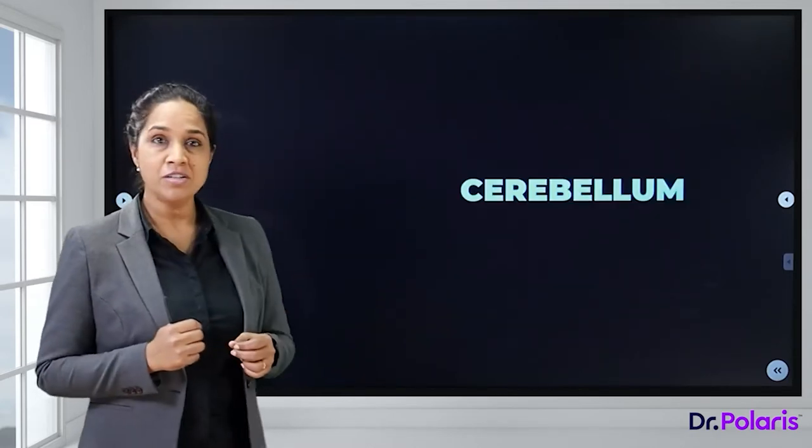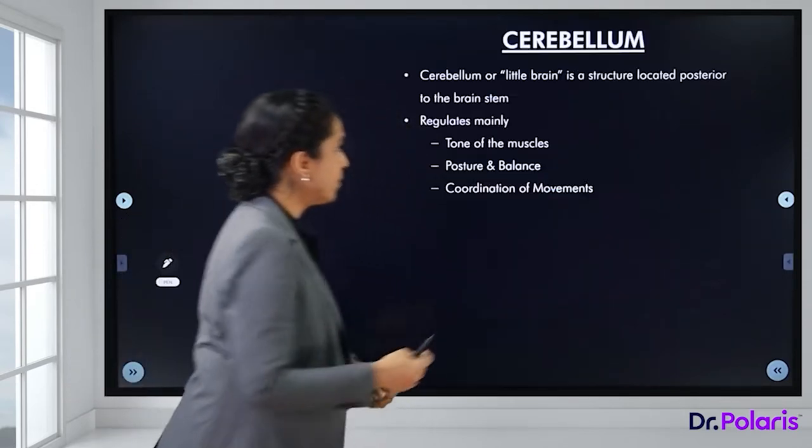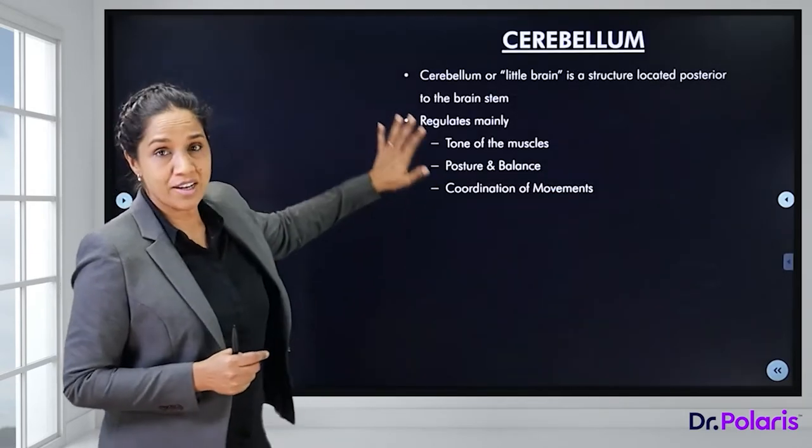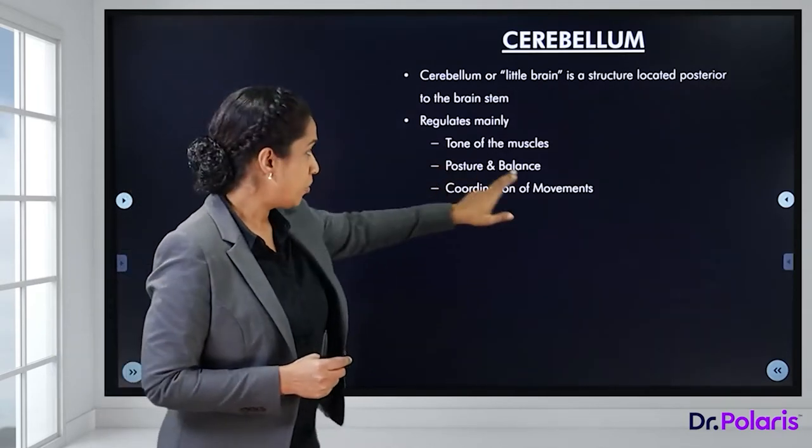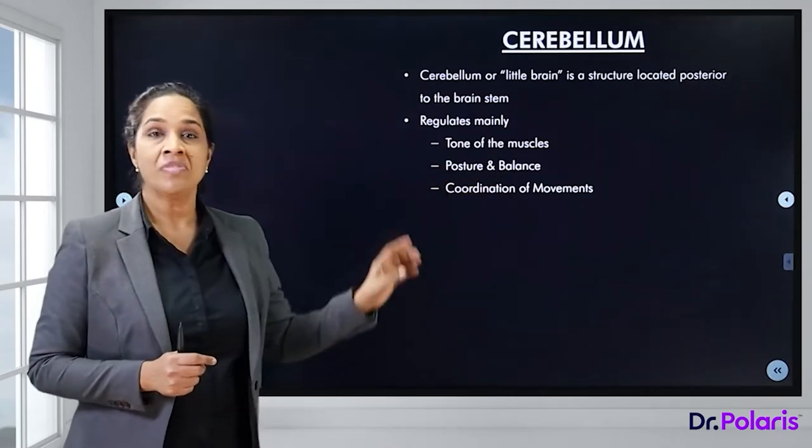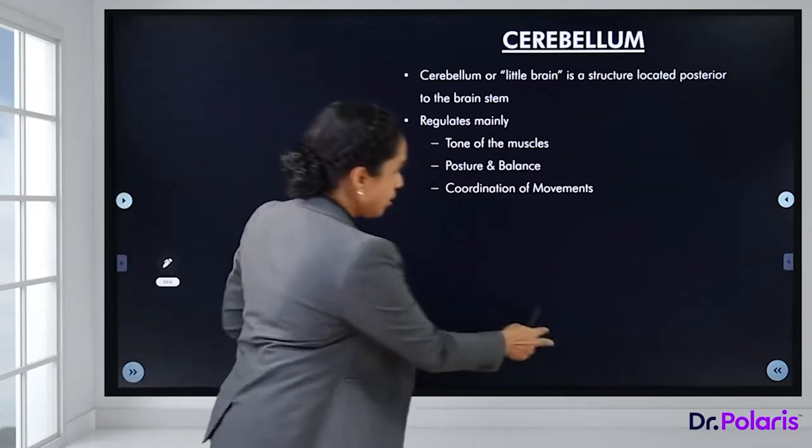Cerebellum is called the little brain because it shares so many similarities with the cerebrum. It is a very important structure for the maintenance of posture and equilibrium, and the number of nerve cells present in the cerebellum is much more than in the cerebrum. Cerebellum regulates mainly the tone of the muscle, posture, balance, and coordinating different movements.